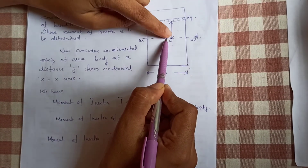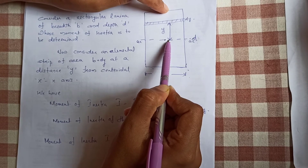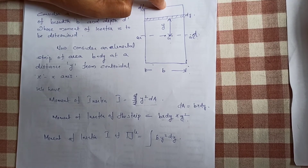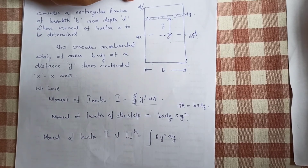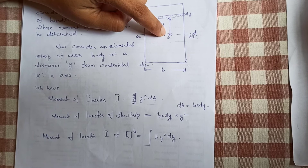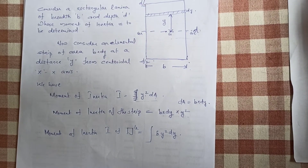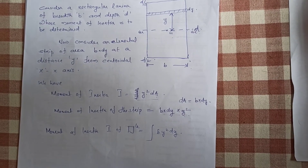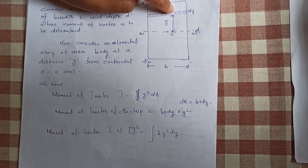The y limit is from minus D by 2 to D by 2, because the centroidal axis is at the middle. So if you draw this diagram, you can see that minus D by 2 is the lower limit and D by 2 is the upper limit. We consider the limits from minus D by 2 to D by 2.